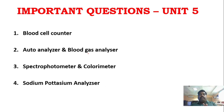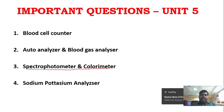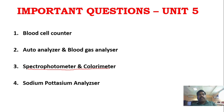Unit 5 is the simplest unit. Just focus on the devices: Auto analyzer, Blood gas analyzer, Sodium-potassium analyzer, and Blood cell counter. You can also add spectrophotometer and colorimeter from the syllabus. Just diagram and explain — it's a very easy subject and you can score well on 4 questions.